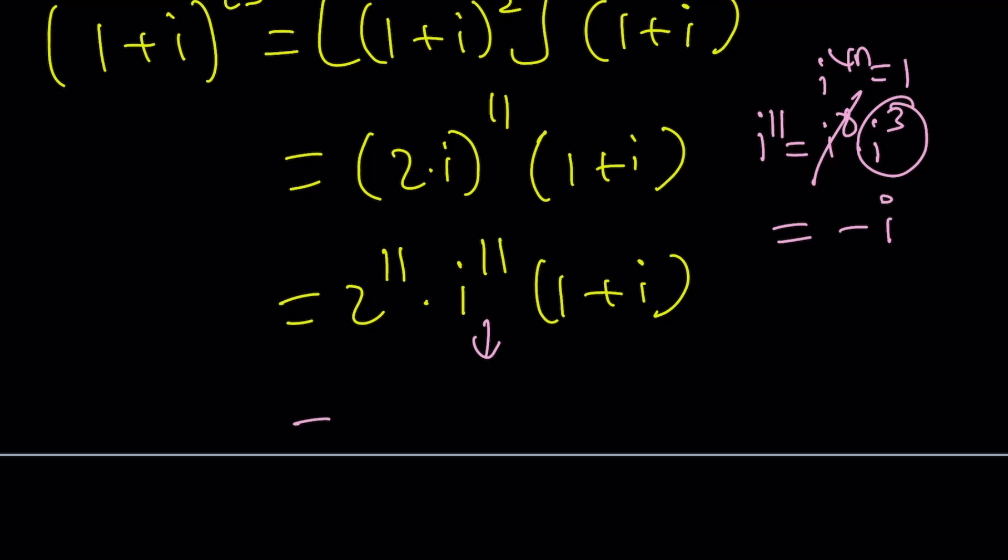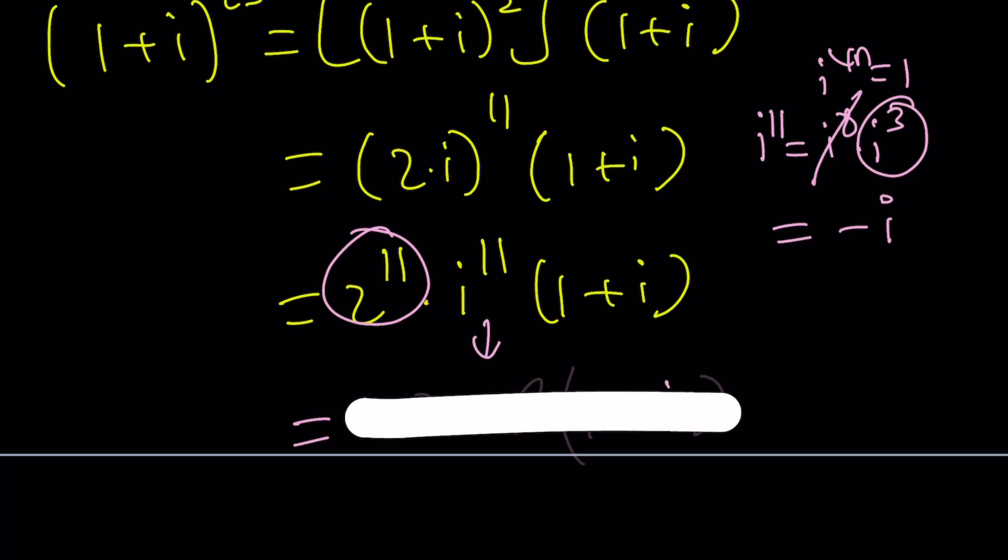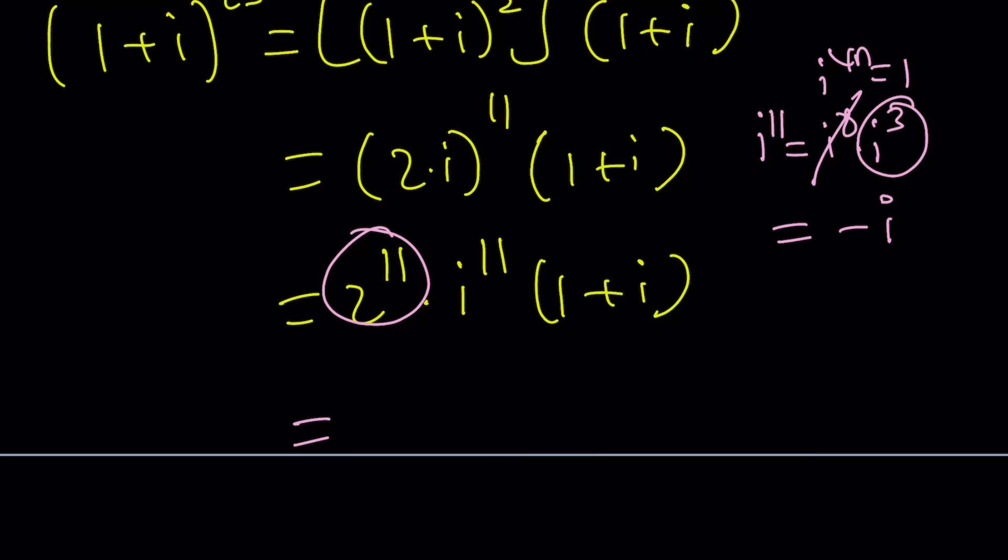So, this is negative i. So, it brings a negative here. This is 2048. Multiply that by 1 plus i. And you're going to get, actually, never mind. This is wrong, because i to the power 11 is i cubed, but that's negative i. Sorry about that.